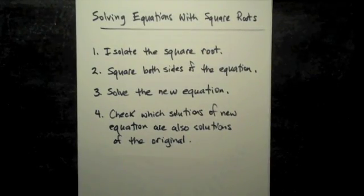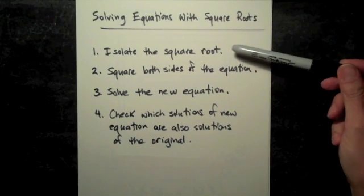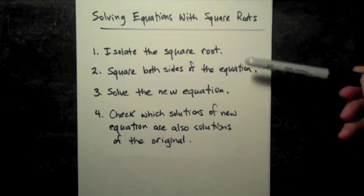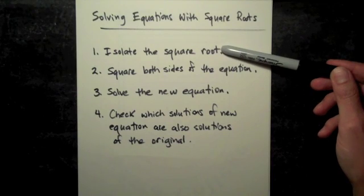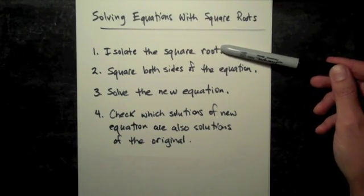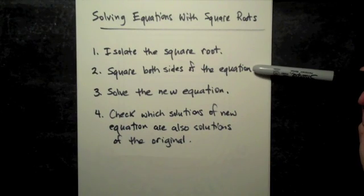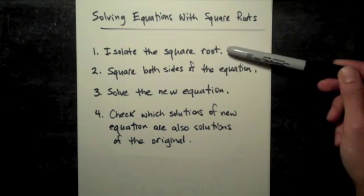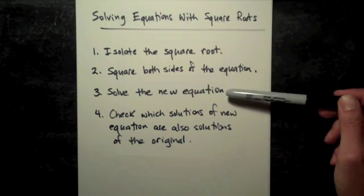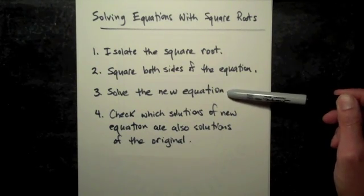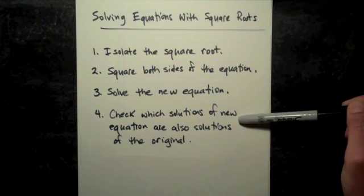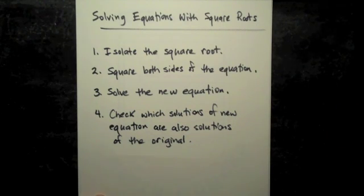We're going to look at solving equations with square roots, and we'll do exactly these four steps in each example. Step one will be to isolate the square root. Squaring both sides of the equation is what will eliminate that square root as long as we've isolated it. We'll solve the new equation that has no radicals in it. And a new important step is to check the solutions from the new equation and see which ones work in the original.